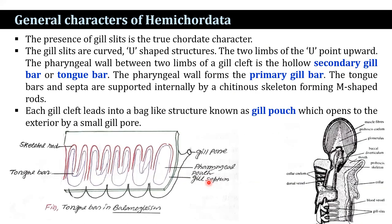The gill slits are true chordate characters and a typical chordate feature. They are numerous in number and increase with age, assumed to be gas exchange organs. The gill slits are curved and U-shaped. The pharyngeal wall between the two limbs of each gill cleft forms a hollow secondary gill bar known as the tongue bar. The pharyngeal wall forms the primary gill bar, and the tongue bars are supported internally by chitinous skeletal rods forming the U-shaped rods.